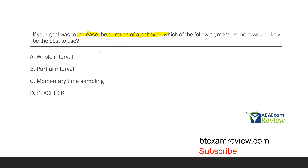A — whole interval. The behavior has to occur the entire time. So let's say we have 15-second intervals — the behavior has to occur for the full 15 seconds. B — partial interval. With a 15-second interval, the behavior has to only occur at any point during those 15 seconds for it to count as a response.